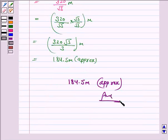The distance between two men is 184.5 meter approximately. This completes the question and the session.